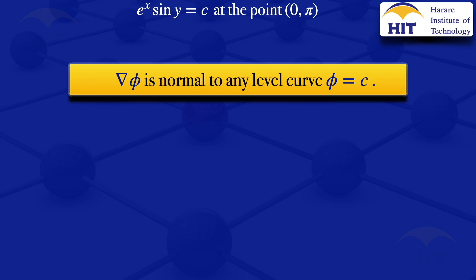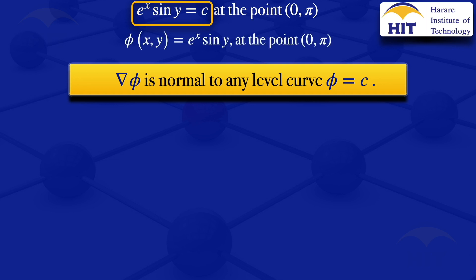In this case we are given the level curve e^x · sin(y) equals a constant. So we deduce that our scalar field φ(x, y) is e^x · sin(y), and we will be looking at the point (0, π).